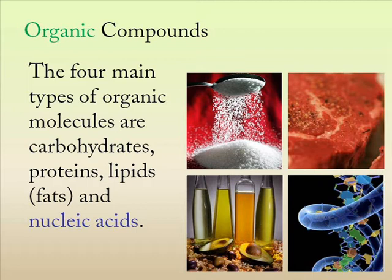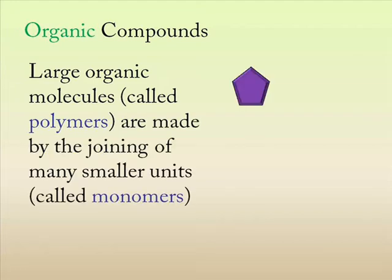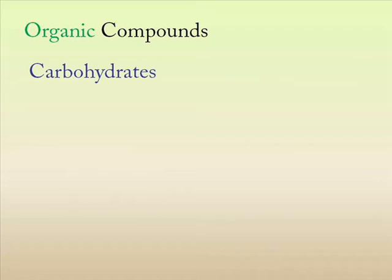Now, we're going to be having a look at these fairly frequently over the next semester. Large organic molecules are called polymers, and they're made by the joining of many smaller units together. The smaller units are called monomers. So, let's have a look at some of these organic molecules.